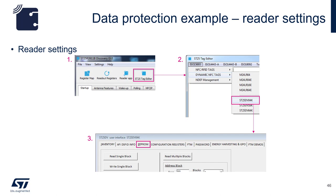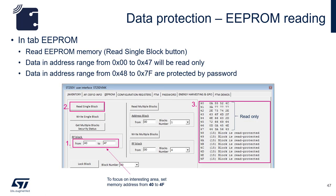Now use the ST25R3911B reader board and the GUI software. Click on the ST25 Tag Editor button. Under the ISO 15693 tab and Dynamic Tags, choose ST25DV04K and select the EEPROM tab. First set the RF block range from 0x40 to 0x4F, then click Read Single Block. You will see that memory blocks from 0x40 to 0x47 can be read, but memory blocks from 0x48 to 0x4F cannot.